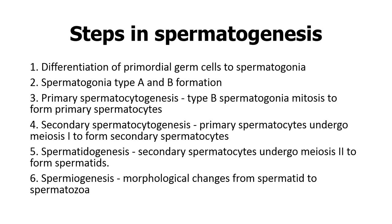The steps in the formation of the mature spermatozoa are usually divided into eight steps. The first is the differentiation of the primordial germ cells to give you spermatogonia, which are divided into type A and type B. The type B are the ones that actually undergo mitotic division to give you primary spermatocytes. The formation of primary spermatocytes is what we call primary spermatocytogenesis.